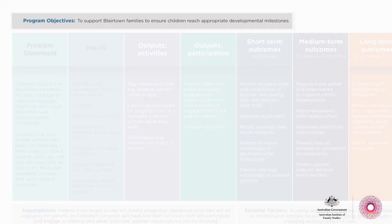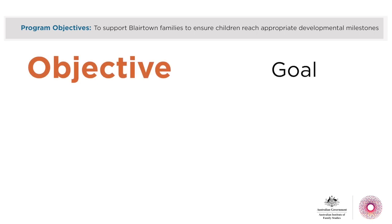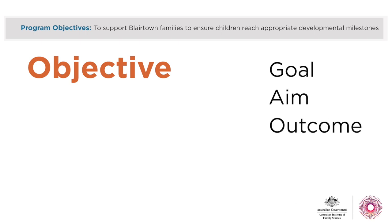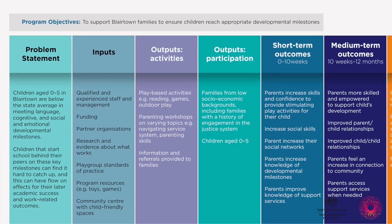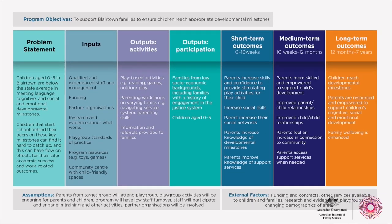Now let's look at the objective box at the top of the template. The term 'objective' is often used interchangeably with goal, aim or outcome — but whichever term you use, what we want here is a concise sentence or two describing what the program is trying to achieve. Most people are pretty clear about their program objectives, and this is often already recorded in a project plan, a funding submission or on some promotional material. The objective really anchors the program logic — you should be able to clearly see how the activities in the program will contribute to your objective.